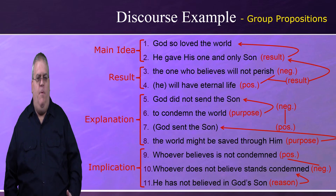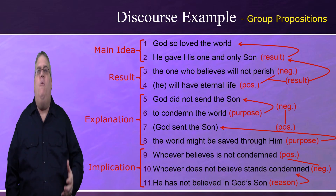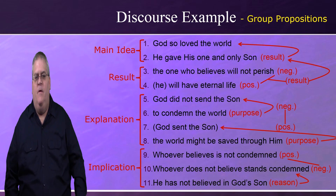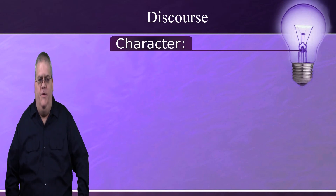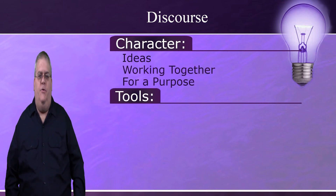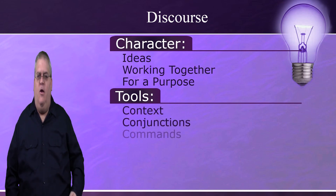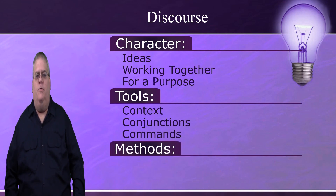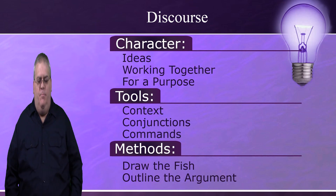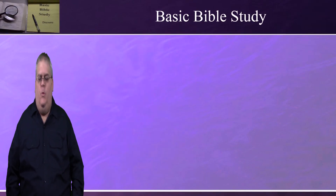Of course, there is much more in this passage that could be described, but I hope this has given you a decent example of how you can profitably read discourse by looking at its typical characteristics using the tools and methods we've discussed. To review: the character of discourse is that it is ideas working together for a purpose. The tools for reading discourse are context, connecting conjunctions, and commands. The methods for reading discourse are drawing the fish and outlining the argument. Hopefully you now have a decent introductory understanding of discourse. In the next section of this course, we're going to look at an introduction to reading narratives.